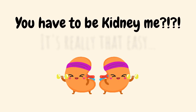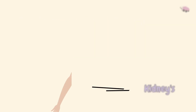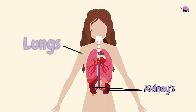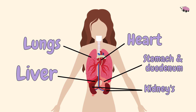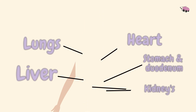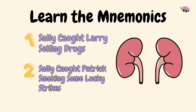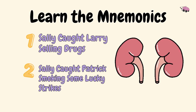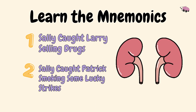You have to be kidney me — it's really that easy? The kidneys sit in pretty close contact with many other abdominal structures. So here are two mnemonics to help you be clinically aware of its relations in the anterior view.